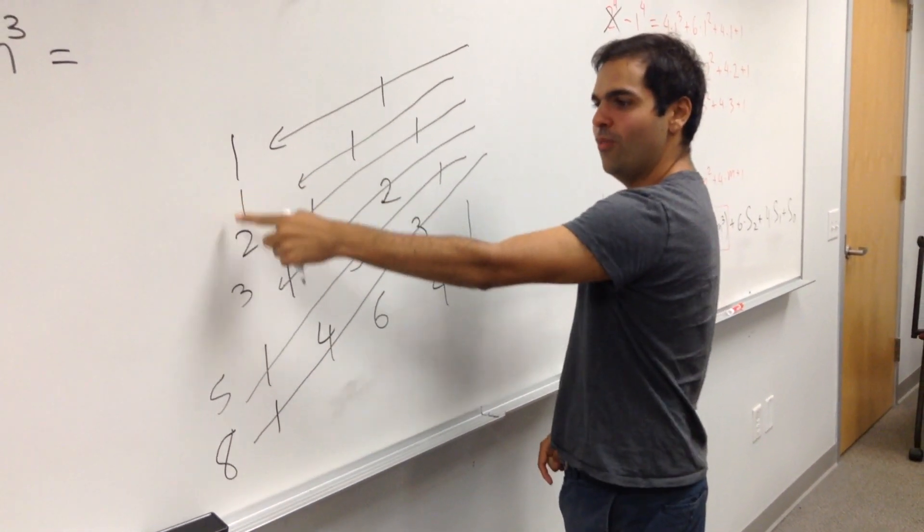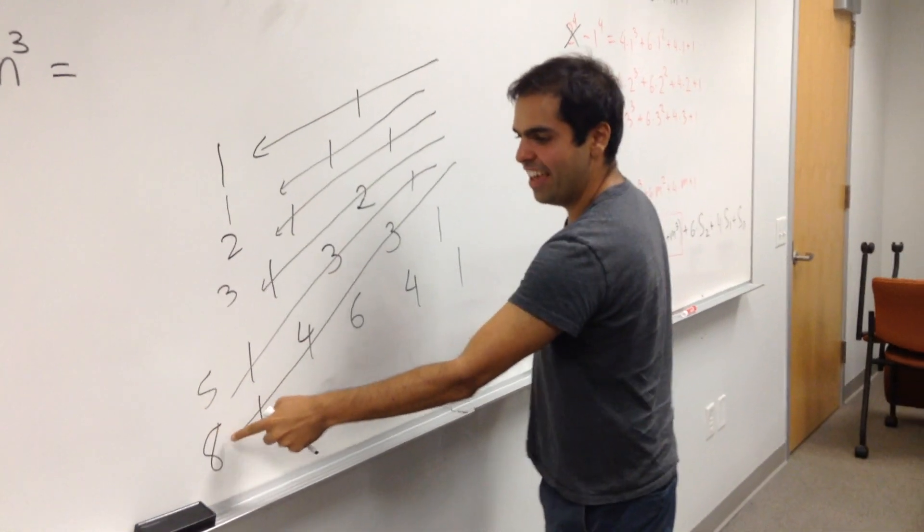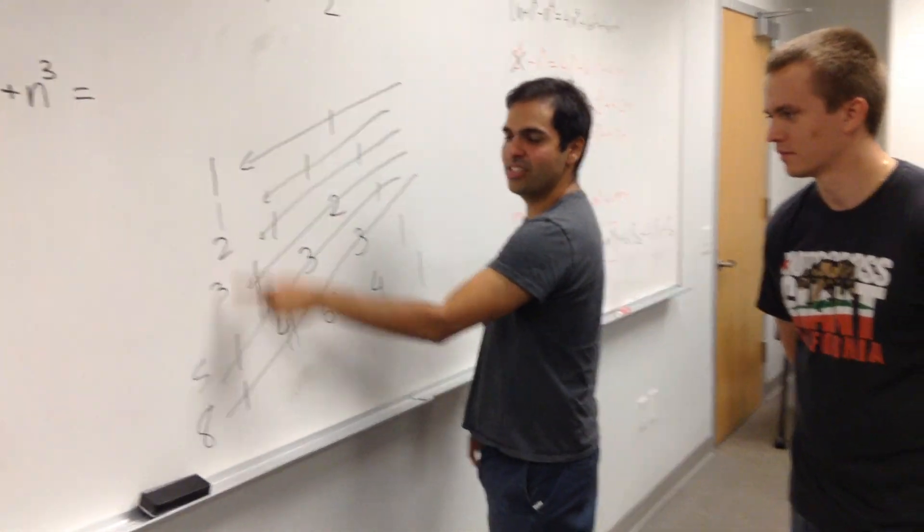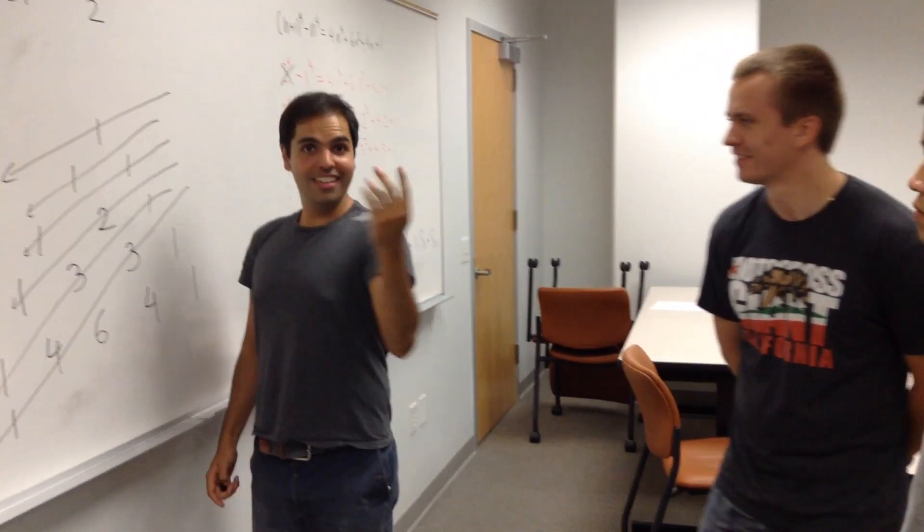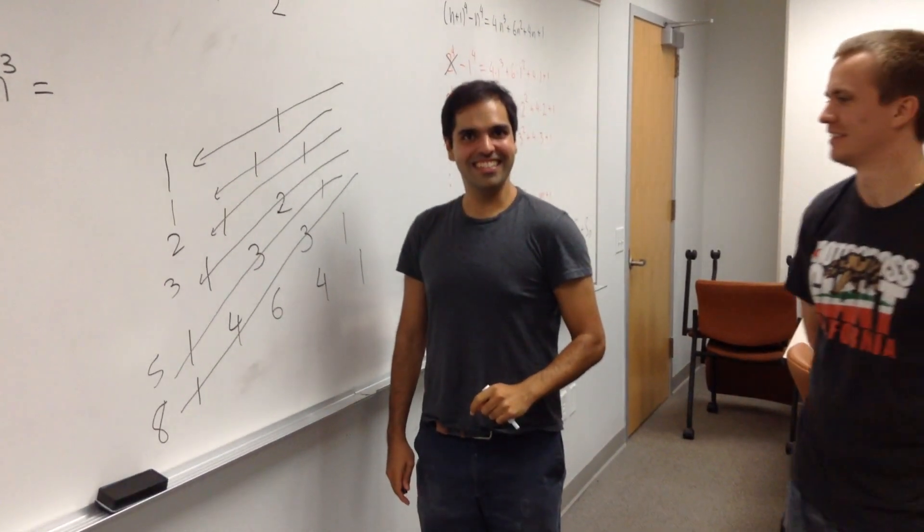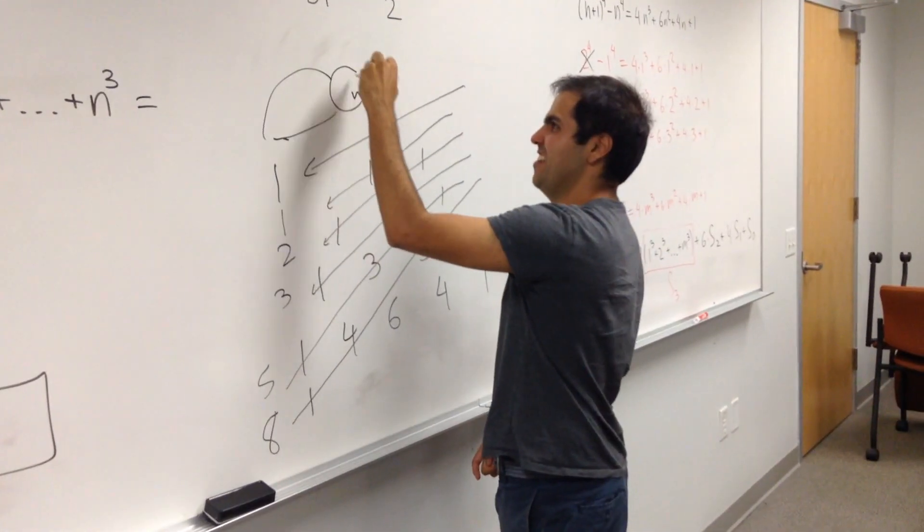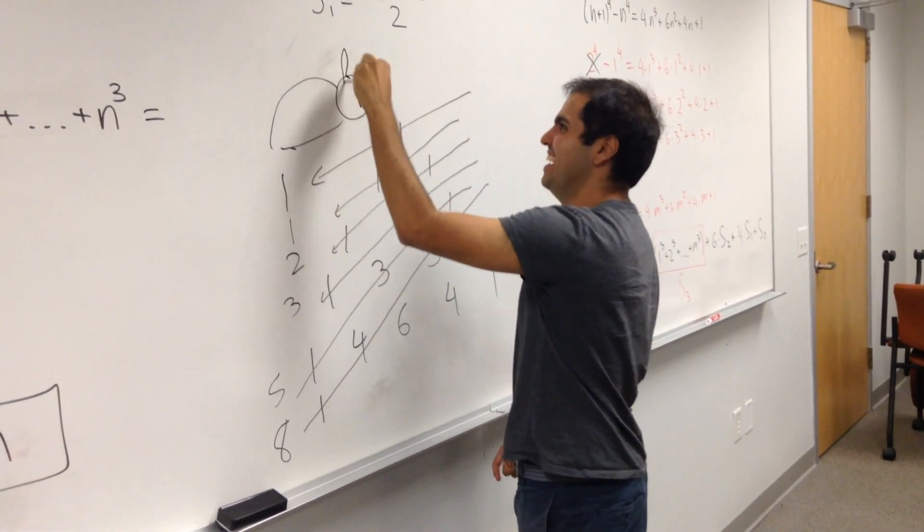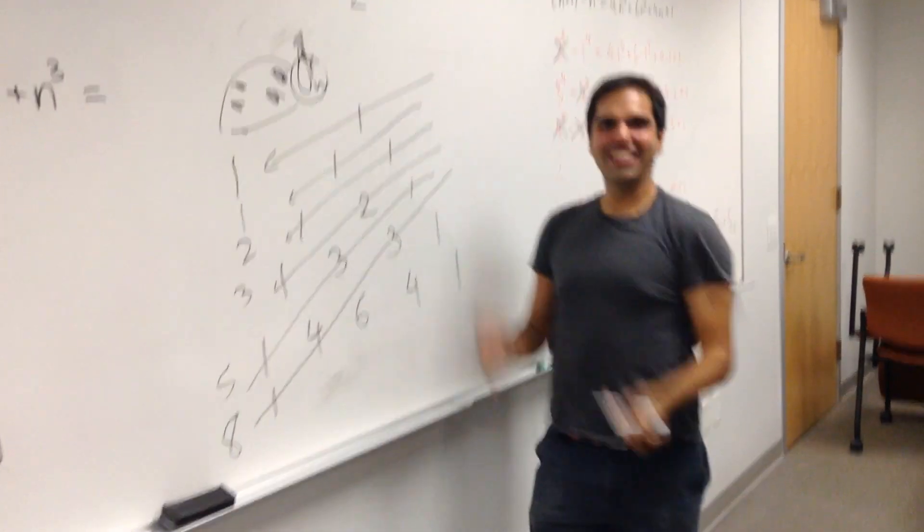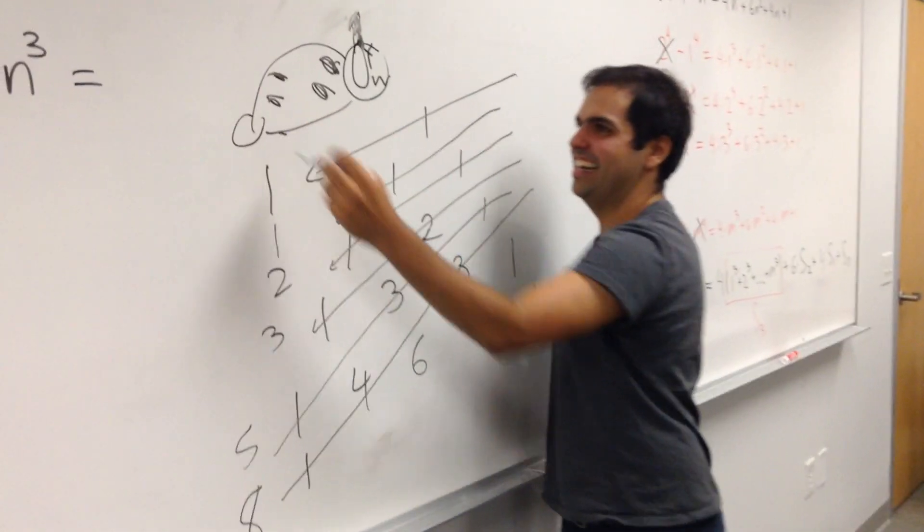So you have the sequence 1, 1, 2, 3, 5, 8. So every term is the sum of the two previous terms. You get the Fibonacci sequence. Where's the bunny? Oreo! Angry bunny. The Fibonacci sequence. Cool, man!